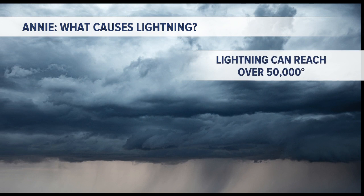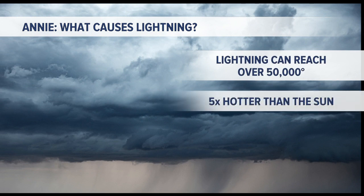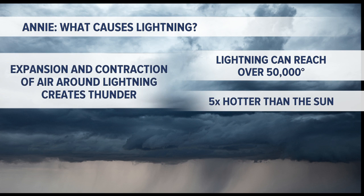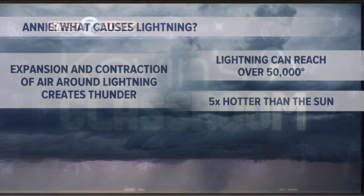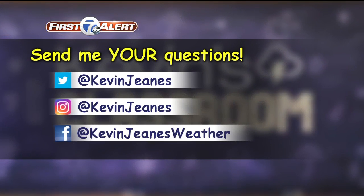So eventually that separation becomes so great it discharges as a lightning strike. That's just a bolt of electricity, and it's very, very hot. That can be over 50,000 degrees — that's five times hotter than the surface of the sun — and it's the heat from lightning that creates thunder. That really intense heat can expand air quickly and then contract the air quickly, and that's how we get the big clap of thunder after lightning.